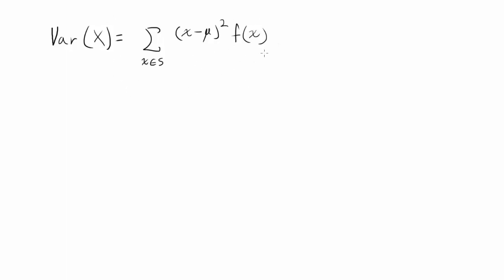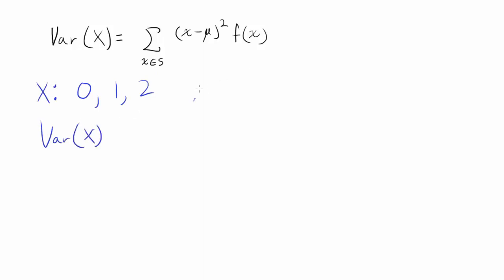You may ask: is there another way of finding variance, maybe one that's easier to use? The answer is yes. But before showing you that method and proving it, I want to make sure we know how to use this formula. So let's say we have a population with values 0, 1, and 2 as the values the random variable can take. Our mean is 0 plus 1 plus 2 over 3, which equals 1, because 1 is at the center.